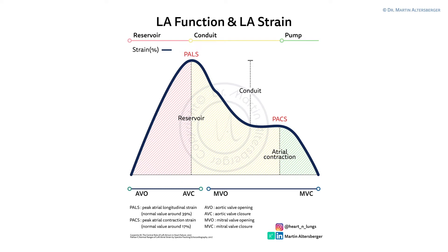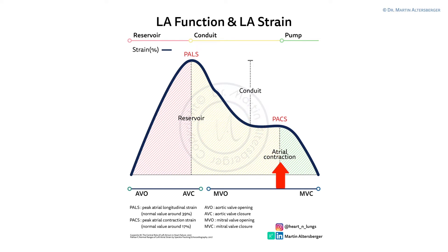According to new literature, we can measure left atrial strain. In left atrial strain, we have several phases and functions to differentiate. We have the reservoir function — painted in red — the conduit function, and the atrial contraction phase. The reservoir function is the filling of the left atrium, from aortic valve opening until aortic valve closure, then continuing with mitral valve opening until mitral valve closure. The conduit function is the filling of the left ventricle — pumping blood out of the left atrium.